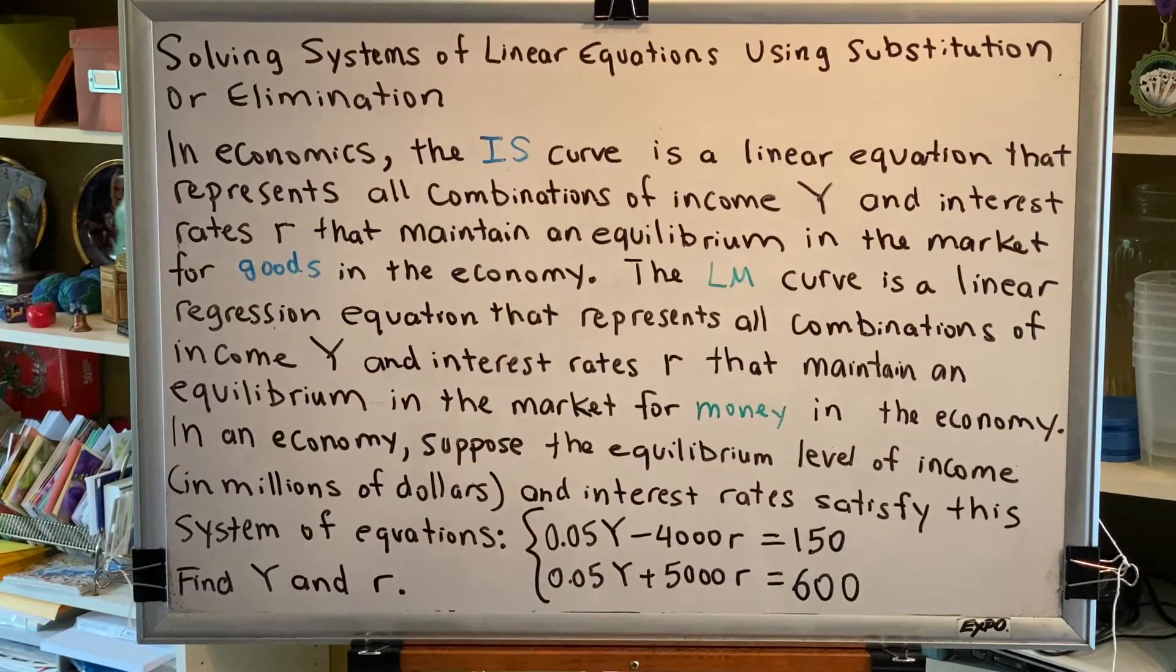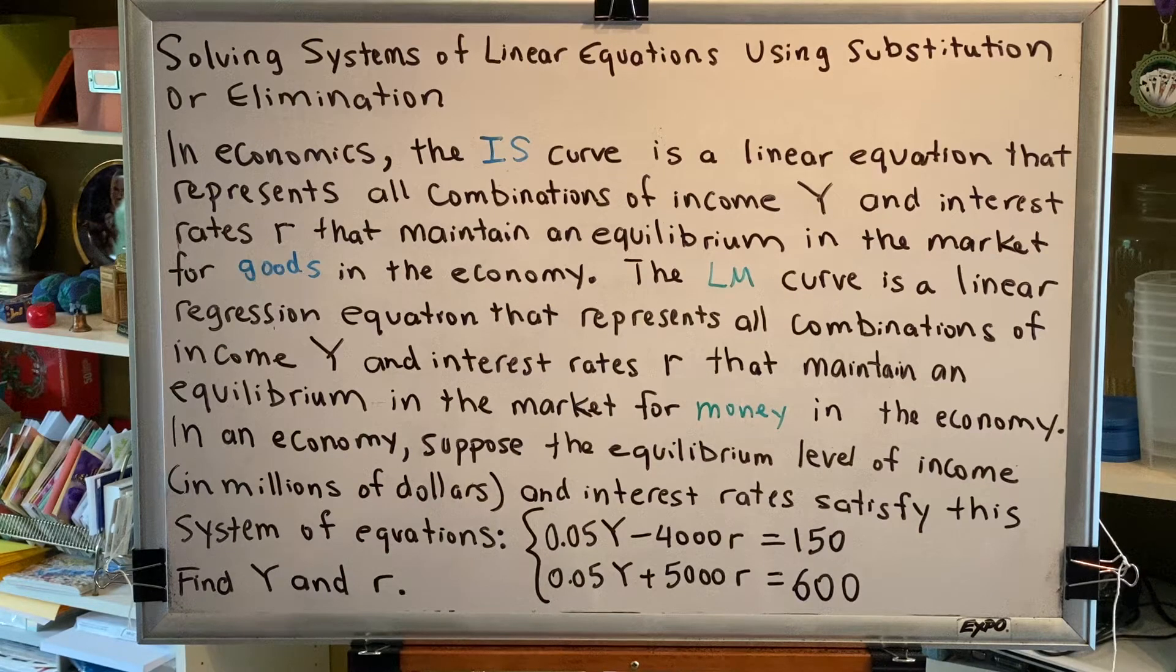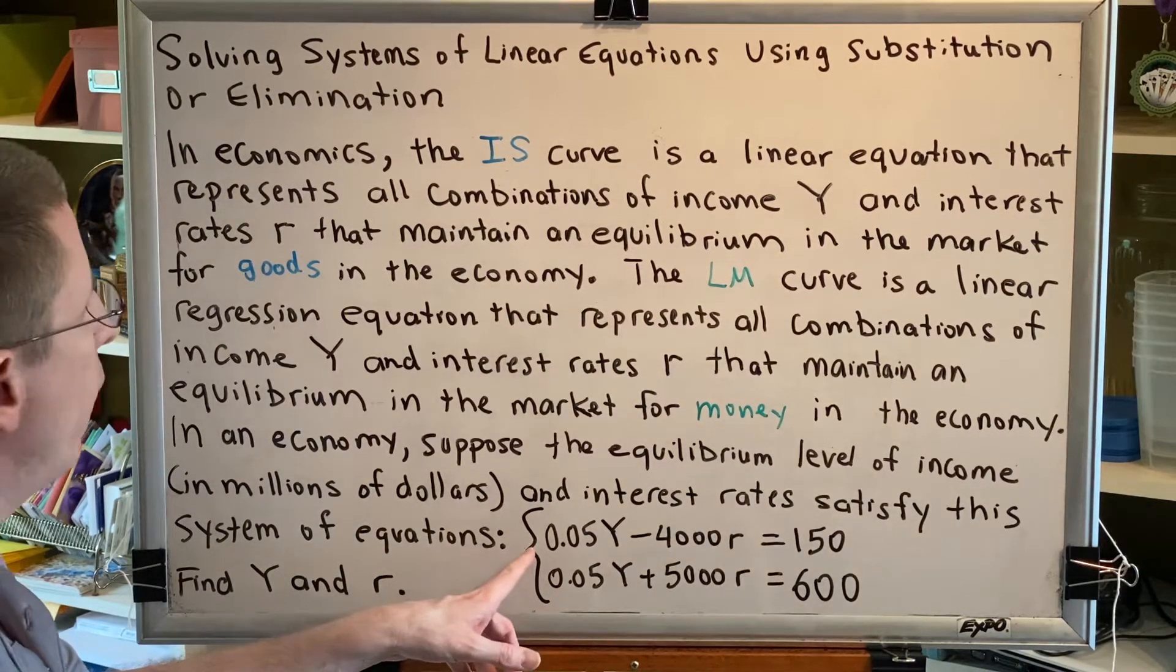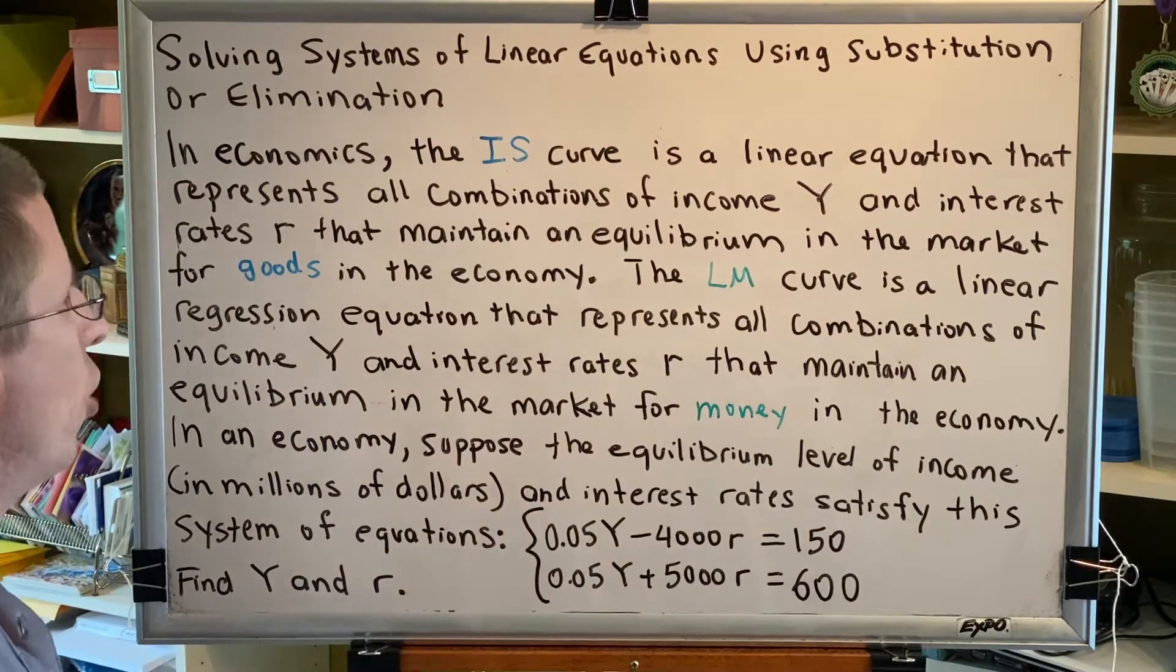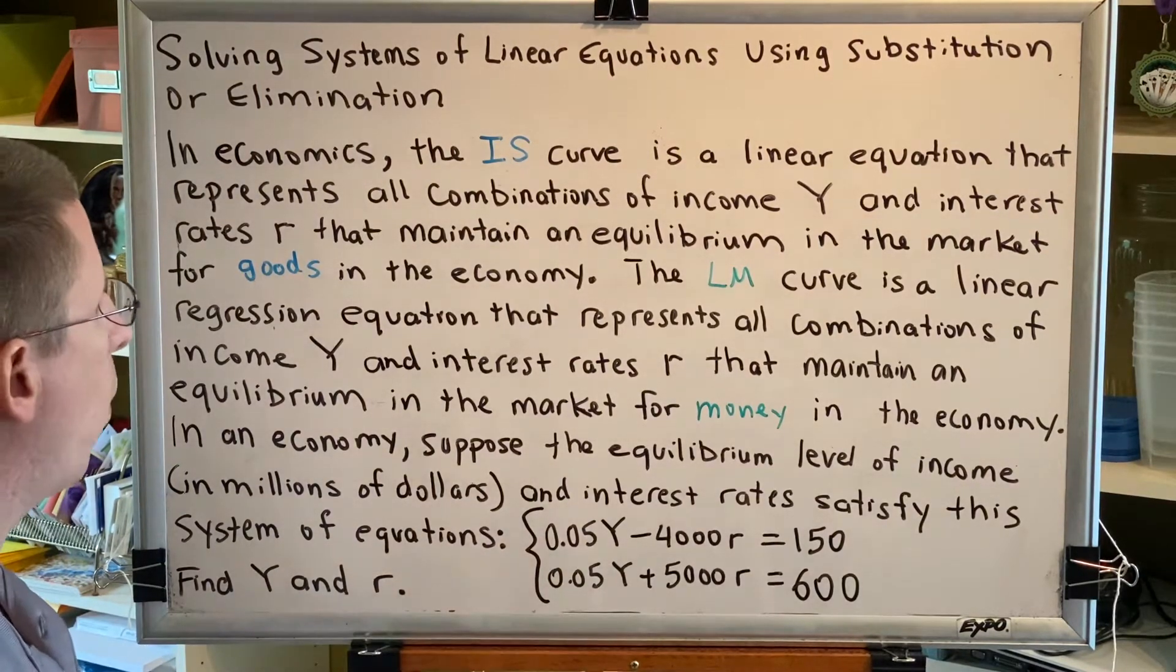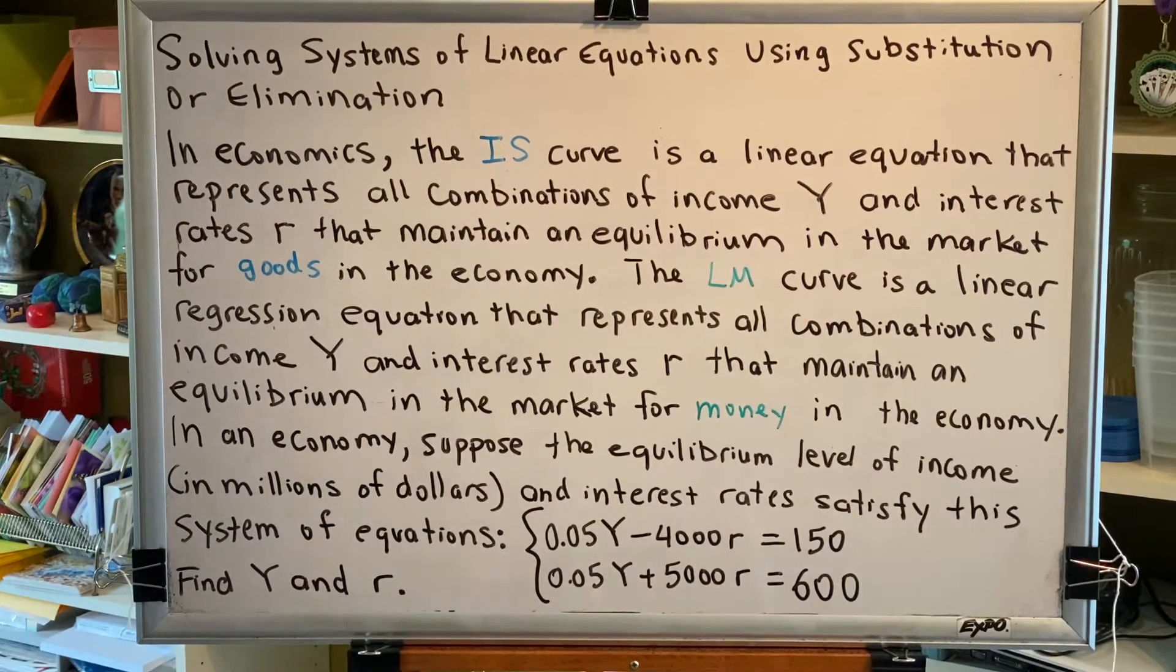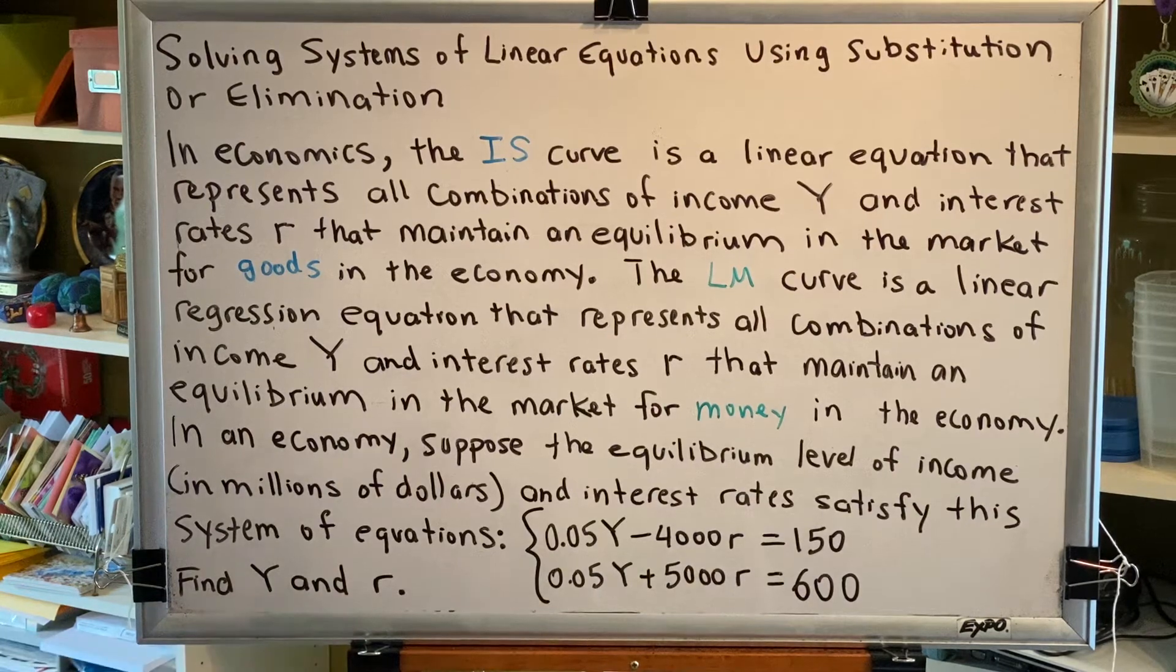In an economy, suppose the equilibrium level of income in millions of dollars and interest rates satisfy this system of equations: 0.05Y minus 4000R equals 150, and 0.05Y plus 5000R equals 600. Find capital Y and R.